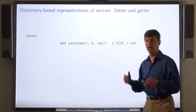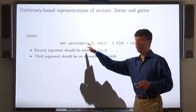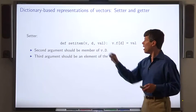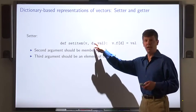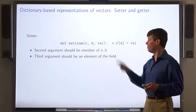Here's the code for the setter. It takes an instance V of vec, an element D of the domain of V, and a value, an element of the field.